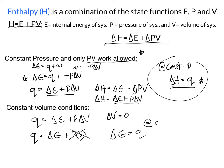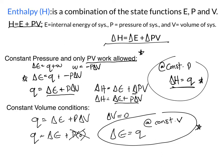At constant volume conditions, Q is equal to delta E, not delta H. This type of relationship doesn't come up very often. We'll see in the future the concept of bomb calorimetry — that's when this constant-volume relationship is utilized.